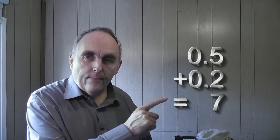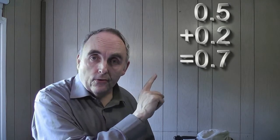So now what we've got is 0.5 plus 0.2 equals 0.7. You can add them up: five plus two equals seven. Then you've got the decimal point, and there are no whole numbers, so you've got 0.7.